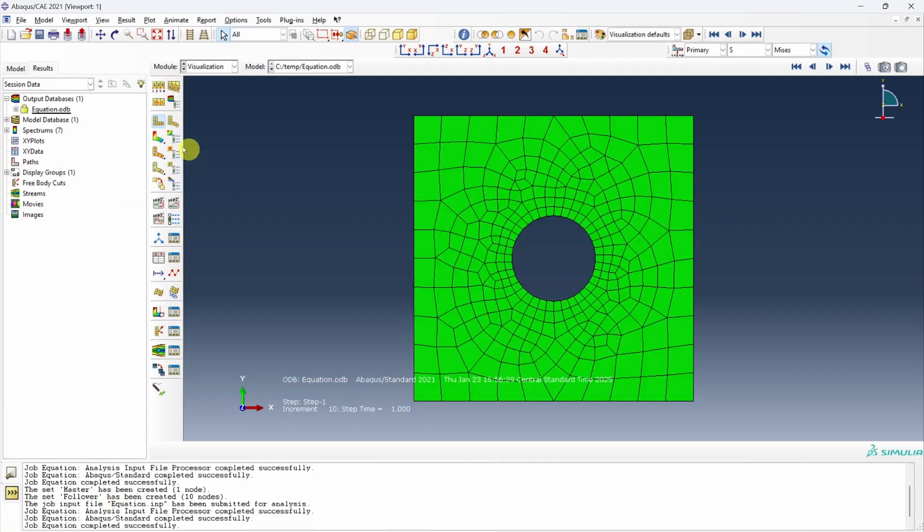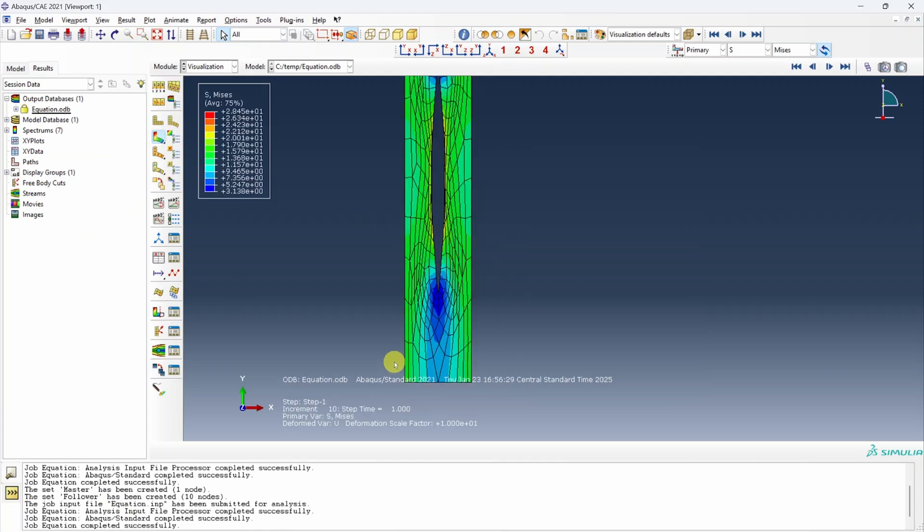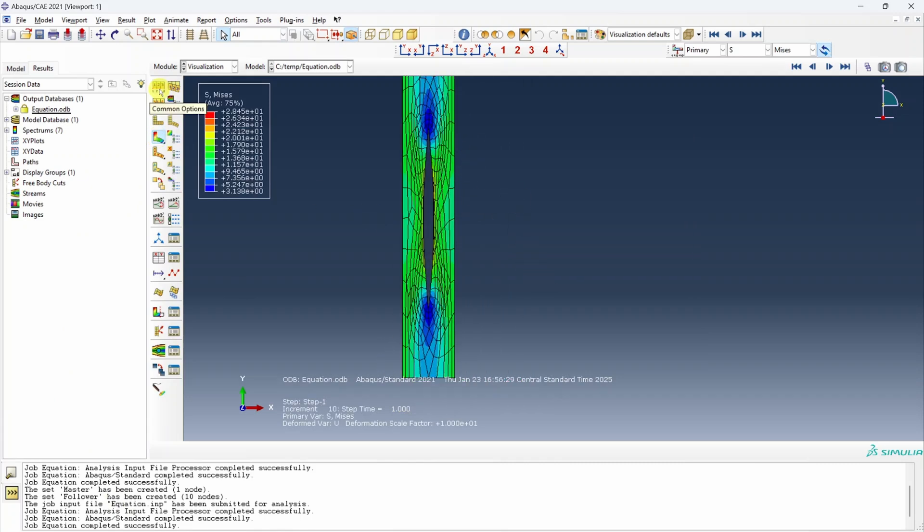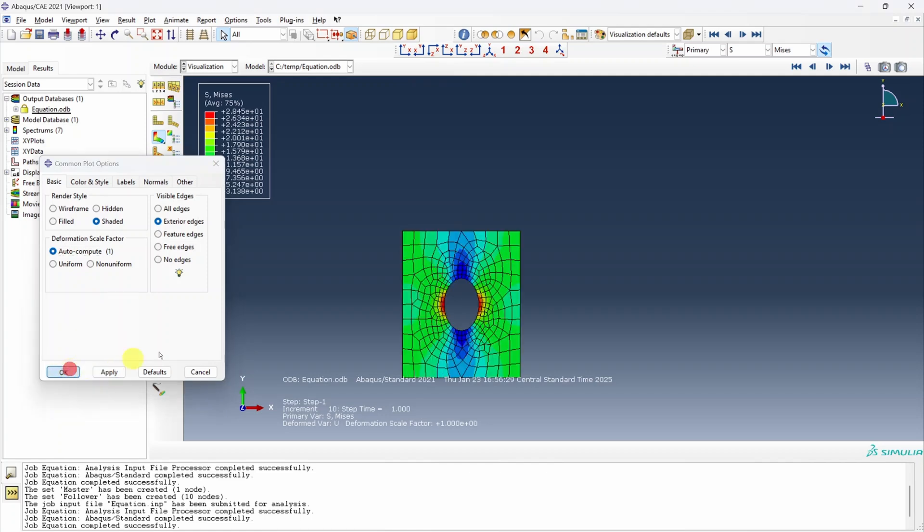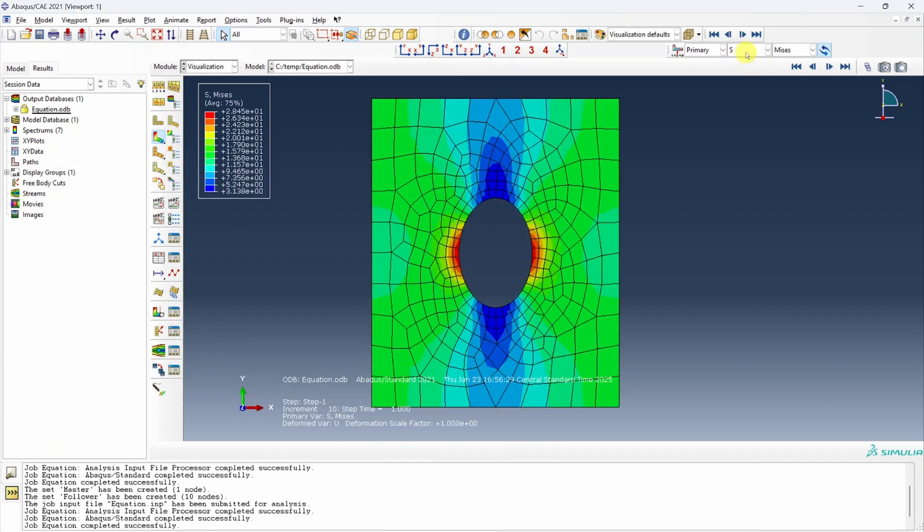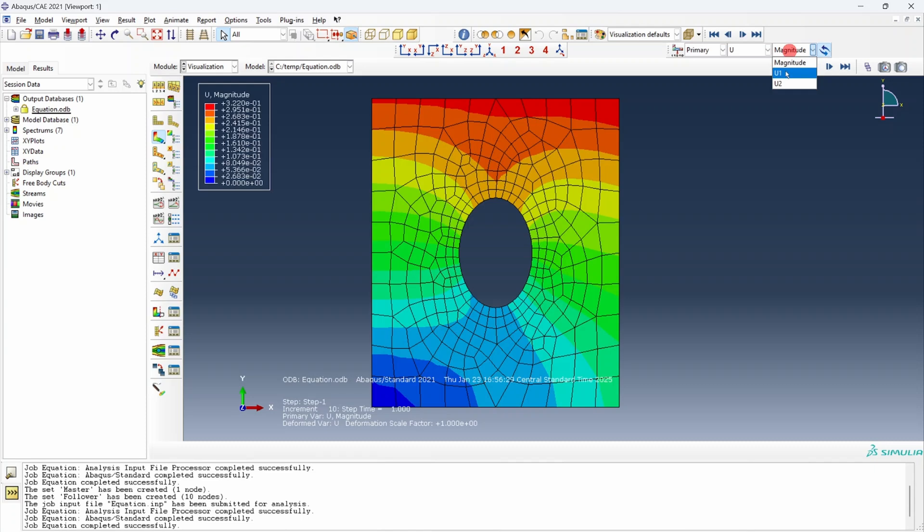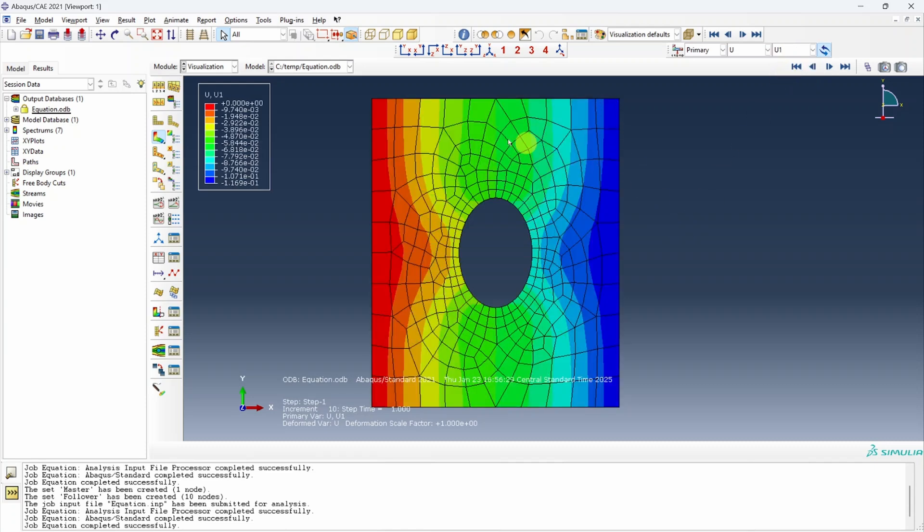Let's go to result. And edge is flat. If you want to compare the displacement contours, let me go back to one over here and then let's go to U1. You can see the contours match exactly on the left and right edge.